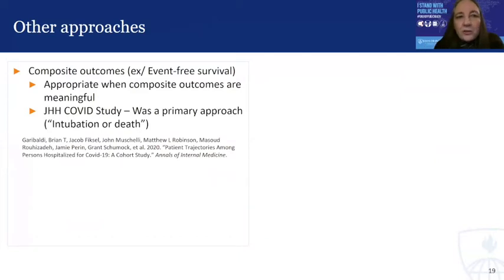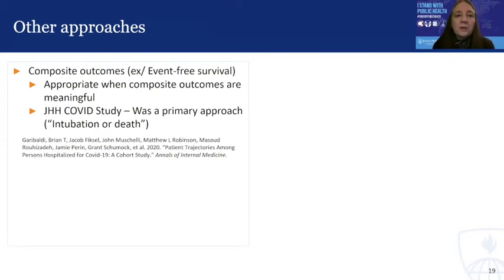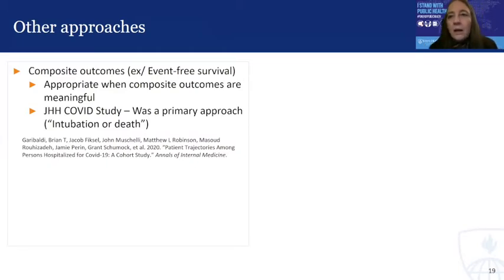What about a couple of other approaches? The first is to use composite outcomes rather than competing risks. The hallmark example here is event-free survival as the good outcome — conversely, the composite outcome of having severe disease onset or death. This is a perfectly appropriate approach when composite outcomes are meaningful, as we felt they were in our COVID study, and you can see a citation for a publication given there.